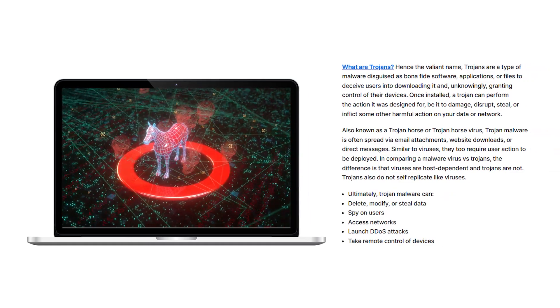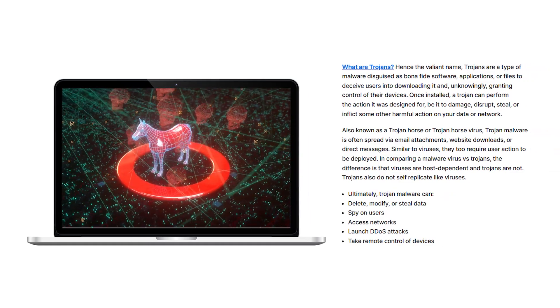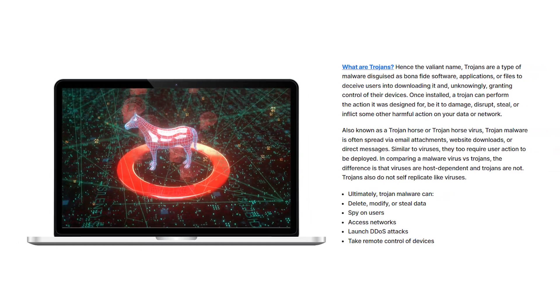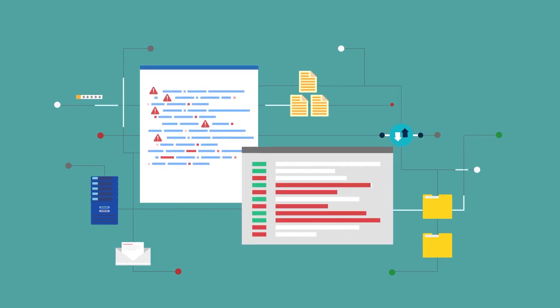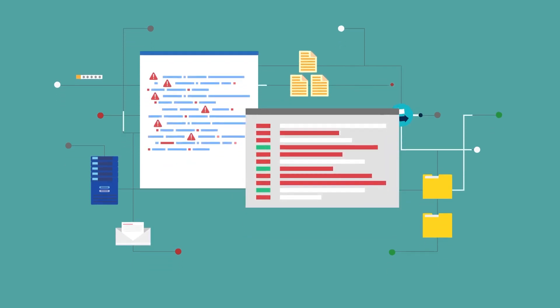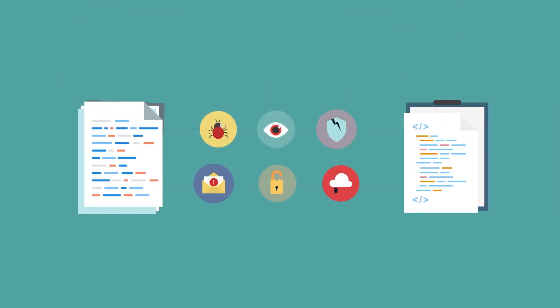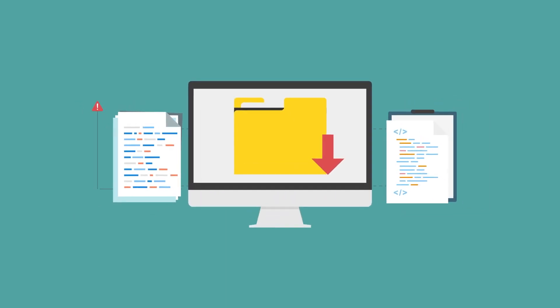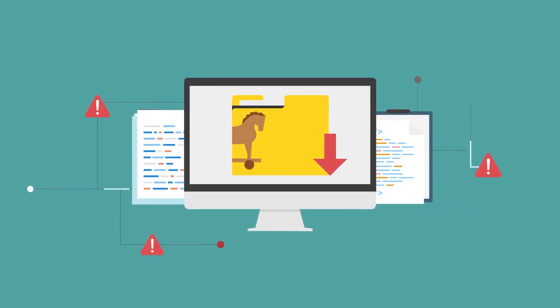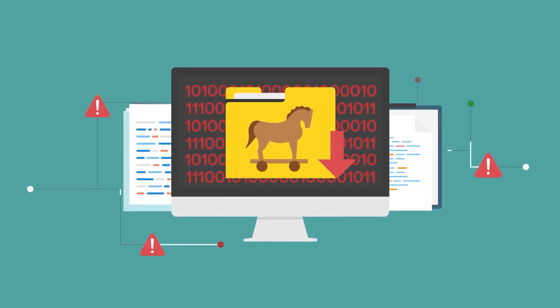Lastly, we have trojans, which are pieces of malware that are much different from viruses and worms on a fundamental level. The way these types of malware work is by disguising themselves as legitimate applications or files, and they launch and attack the second you open them. Now, despite not having the ability to spread and infect other programs, when it comes to severity, they have just as destructive effects as viruses and worms.